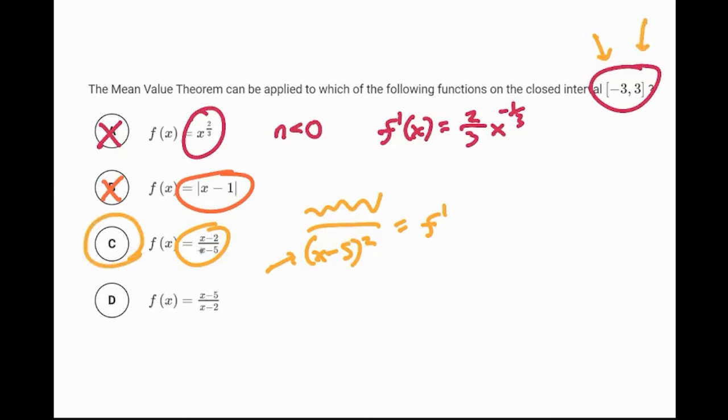The bottom one is the same thing as c, only it's x equals 2. Well, 2 is in the domain, and you'd be dividing by 0 there. You don't have to even check the derivative. So the answer for that one is c.